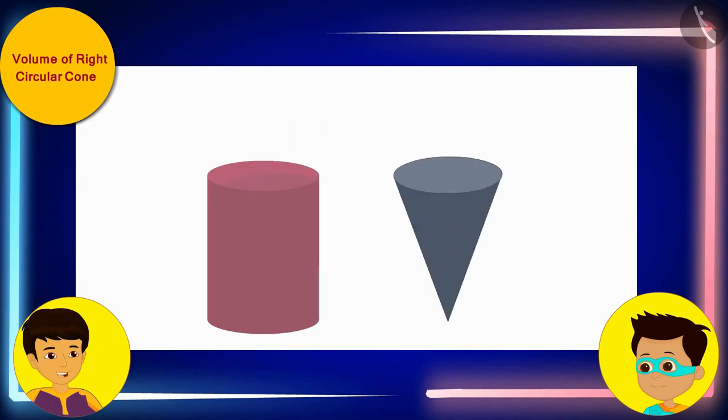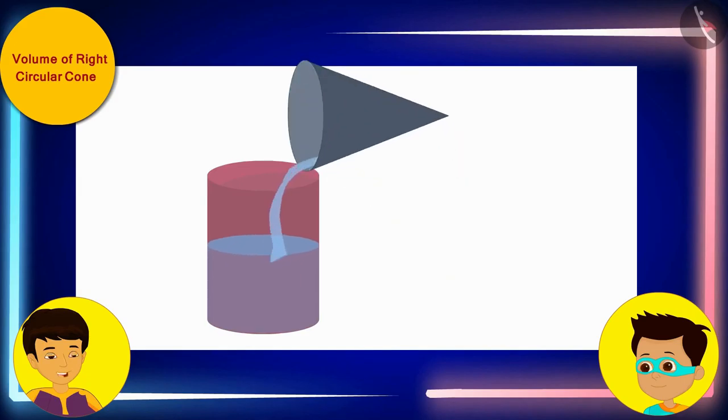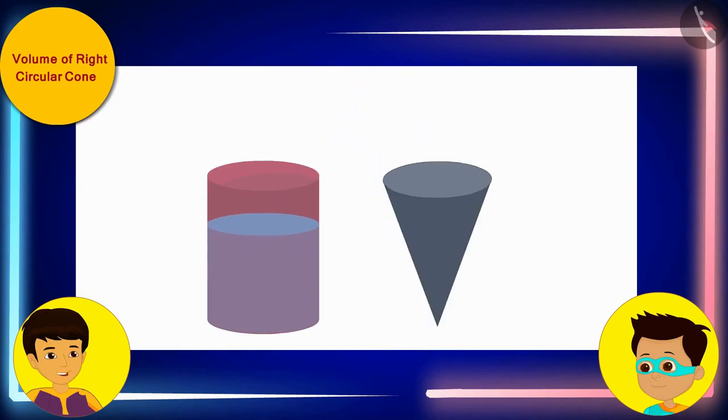Look, Thomas! Some part of the cylindrical vessel has been filled with the water. Now, we will again fill the conical vessel completely with water and pour it into the cylinder. As you can see, the cylinder is still not fully filled.